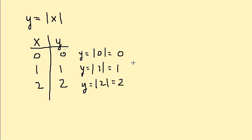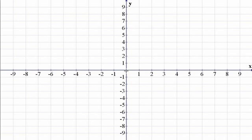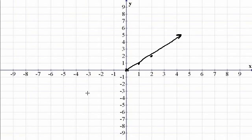Now if we plot these points — 0,0, then 1,1, and 2,2 — and connect them, it gives me a line. But what do we do at 0,0? Do we keep going down? We don't keep going down, because an absolute value is V-shaped — it's the shape of a V.